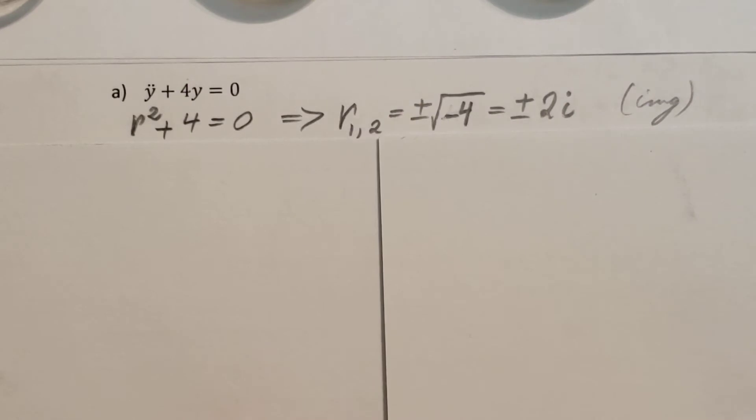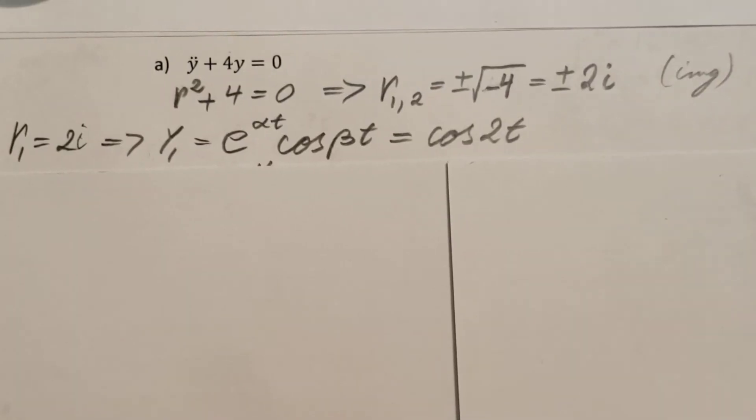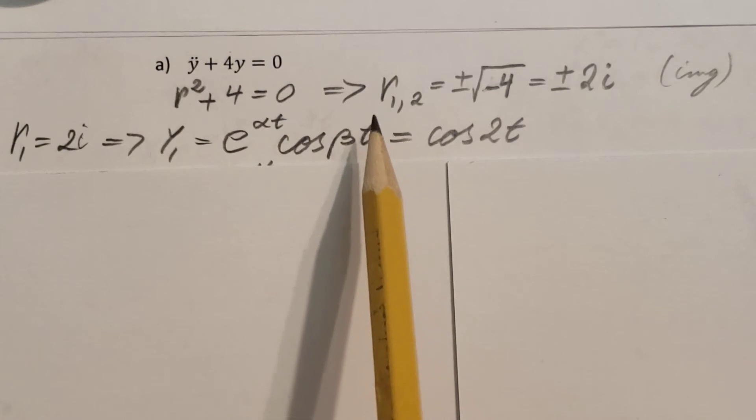So let's follow it. Take the first root, r1 equals 2i. That's going to give us the first solution, the first part of the solution, the y1, equals e to the alpha t times cosine beta t.